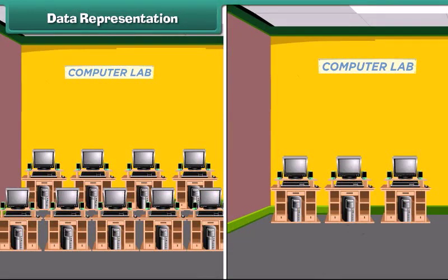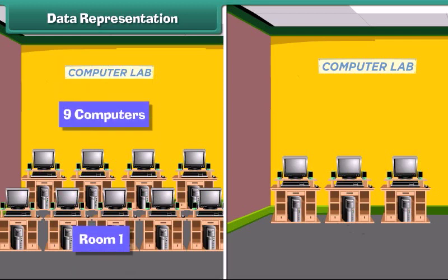Look at the diagram that shows the arrangement of computers in your computer school. Look at the plan and then answer the questions that follow. How many computers are there in room 1? There are 9 computers in room 1.